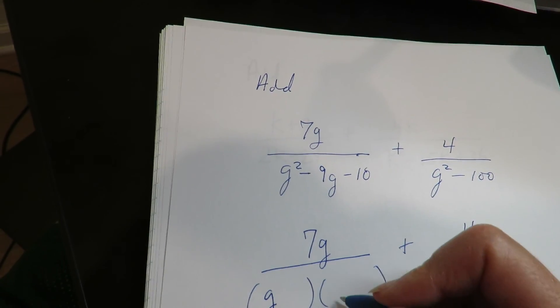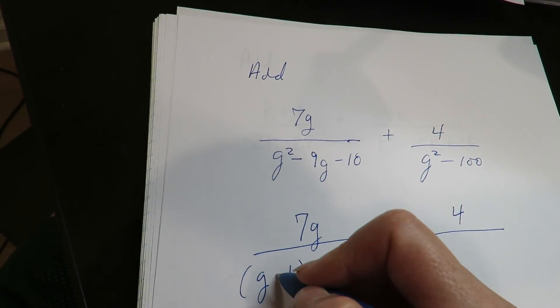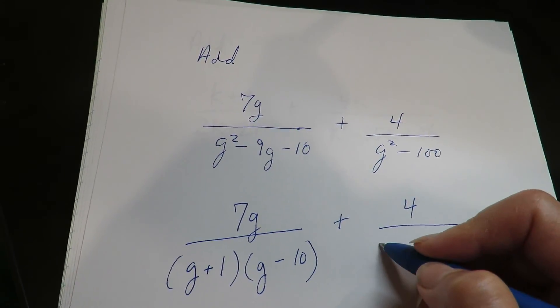Let's see here. It's going to multiply to negative 10, add to a negative 9. It's got to be a negative 10 plus 1. Here, this is the difference of perfect squares.